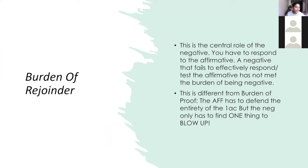Burden of rejoinder — this is the central role of the negative. You have to respond to the affirmative. The negative has a job to respond to the AF and to refute it. The negative that fails to effectively respond and test the affirmative has not met the burden of being negative. There is a burden of being negative: not only did I say something to the affirmative, but I said something that effectively tests the ability for the affirmative to solve.